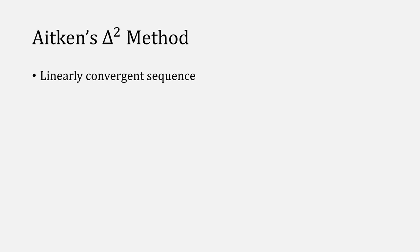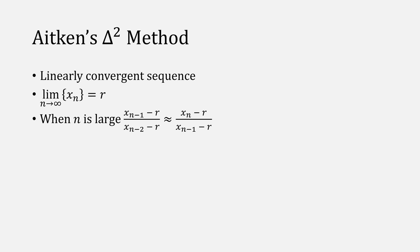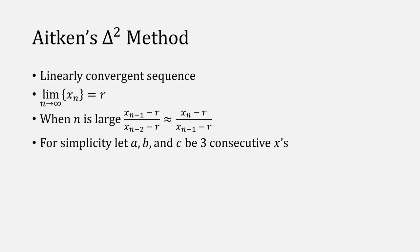Given a linear convergence sequence, in this case we're approaching a root. When n is large, our error ratios will be about the same. For simplicity, we'll call these three consecutive numbers a, b, and c. Our formula will look like this, and given this, we can actually solve for r.